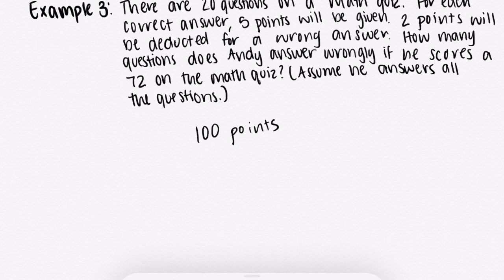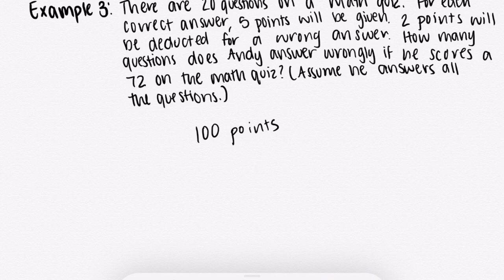For every question he answers wrong, he loses the five points he could have gained for a correct answer, plus the two points deducted for a wrong answer — so he loses seven points total for each wrong answer. To lose 28 points, you divide 28 by seven to get four, which means Andy answered four questions wrongly.